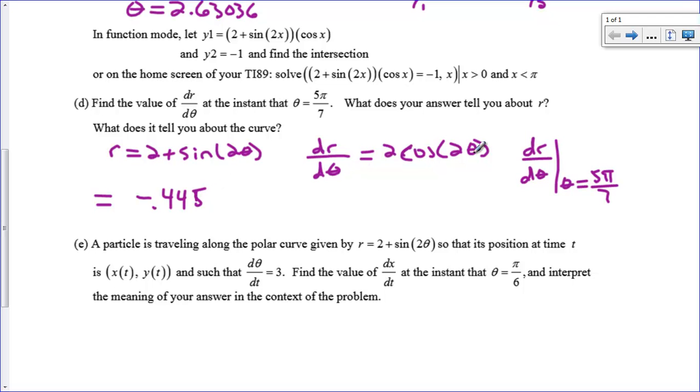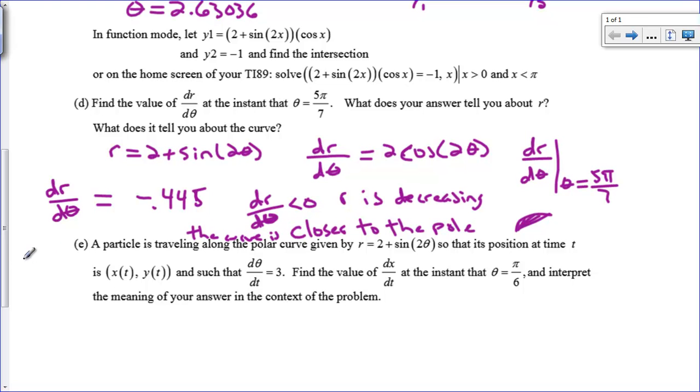Now we have to explain this. What does this answer tell you about r? I got that a derivative of r was negative. And if your derivative is negative, what does that tell you about your original variable? dr/dθ was negative. That means that r is decreasing. Or I could say r is decreasing because dr/dθ was less than 0. So that's what that tells me about r. My r is getting smaller as we go through that angle. Now what does that tell you about the curve? If your radial lines are getting smaller, the curve is being pulled in to the origin. So you would say that the curve is getting closer to the pole.